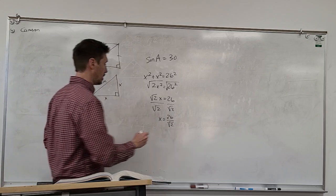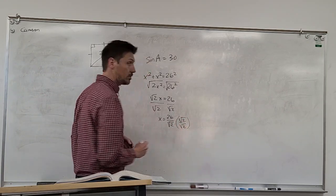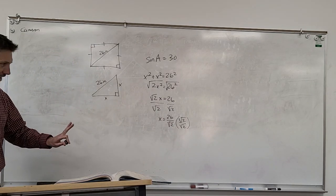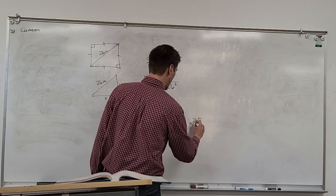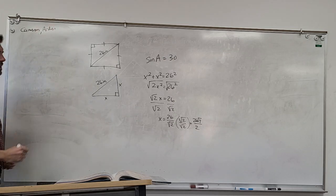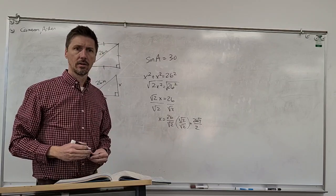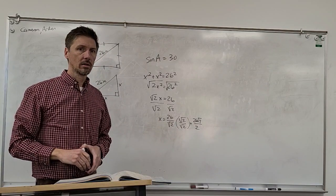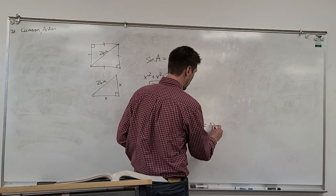We never want to leave the radical on the bottom, so how would I get rid of that radical? Multiply the numerator and the denominator by — I knew what you were saying to me. So that's right: 26 square root of 2 divided by 2 would be the answer for that, right? They reduced it to 13 square root of 2 and then a decimal of 18.4.